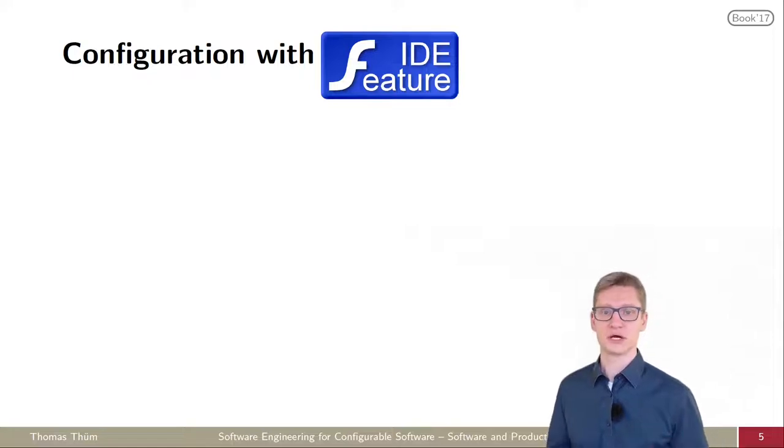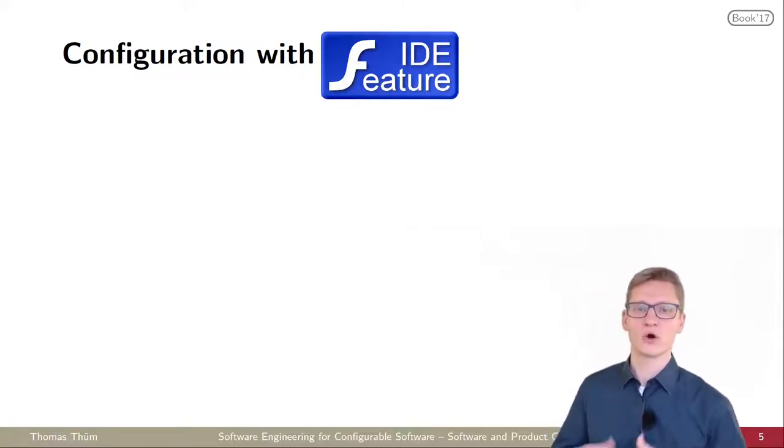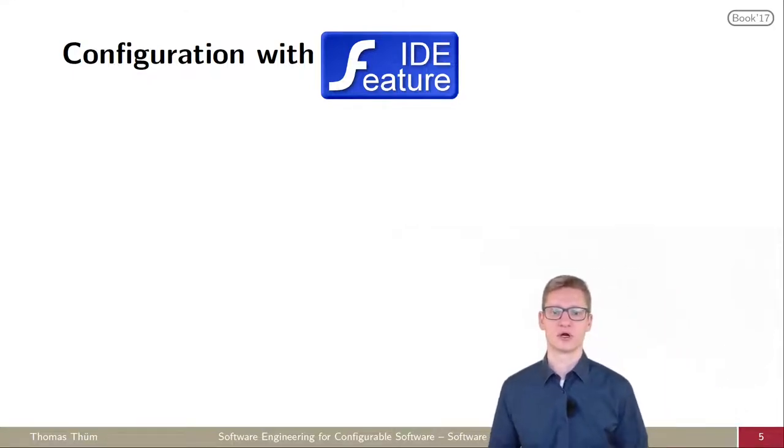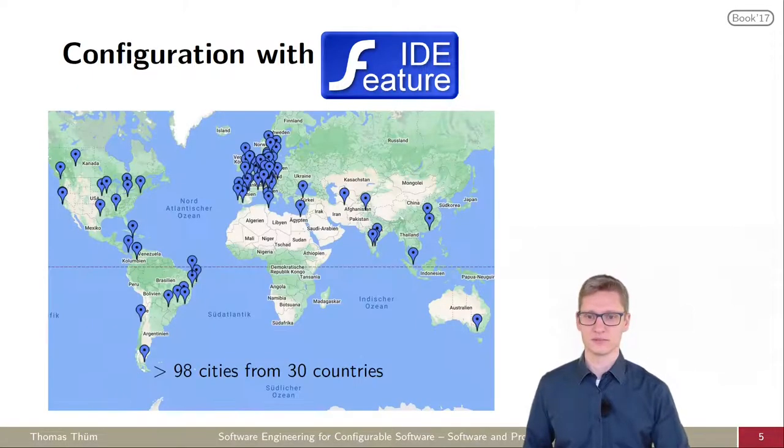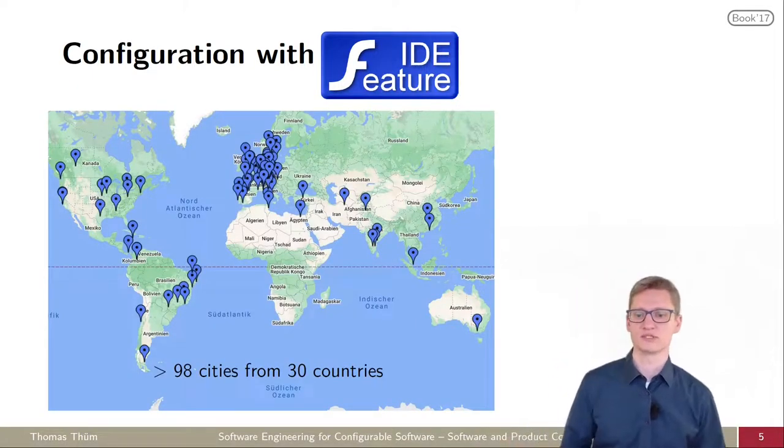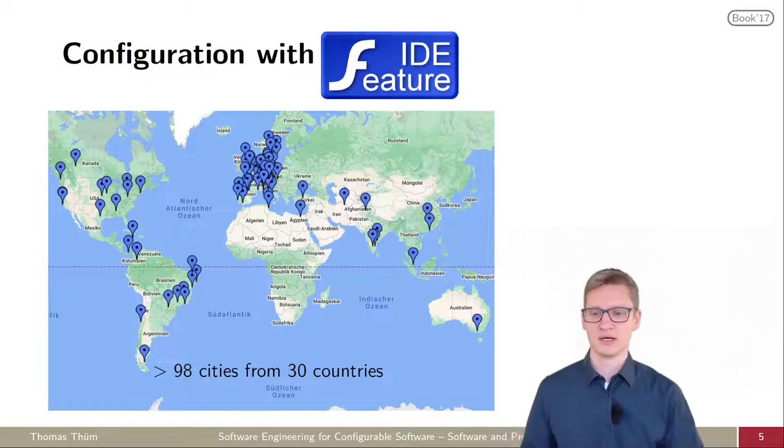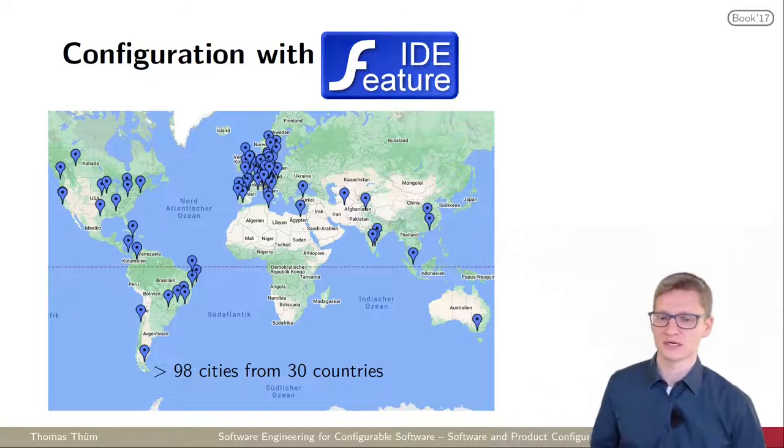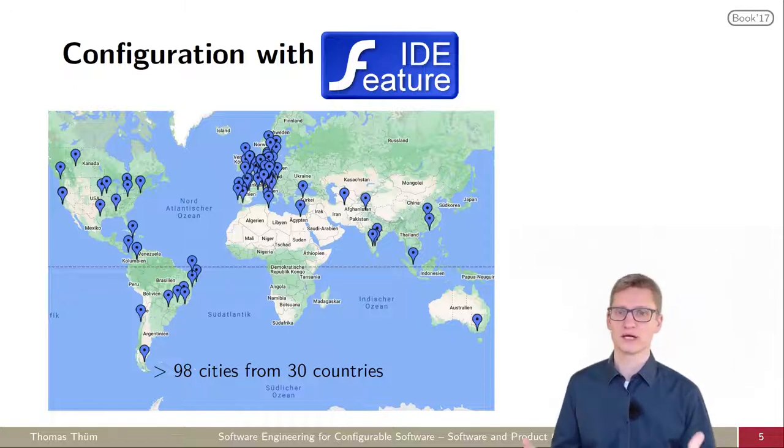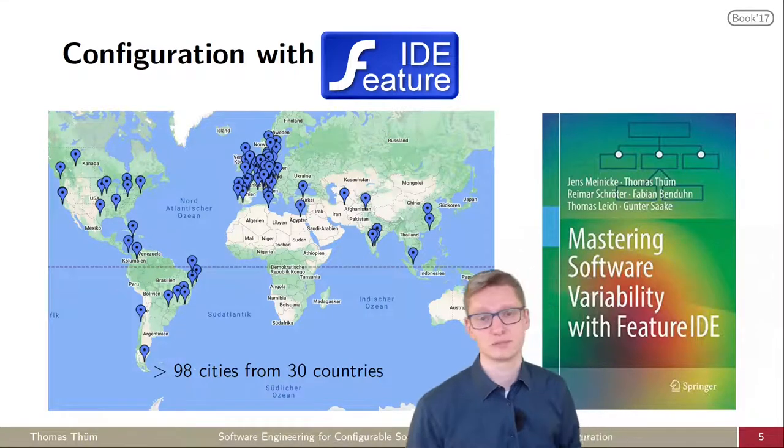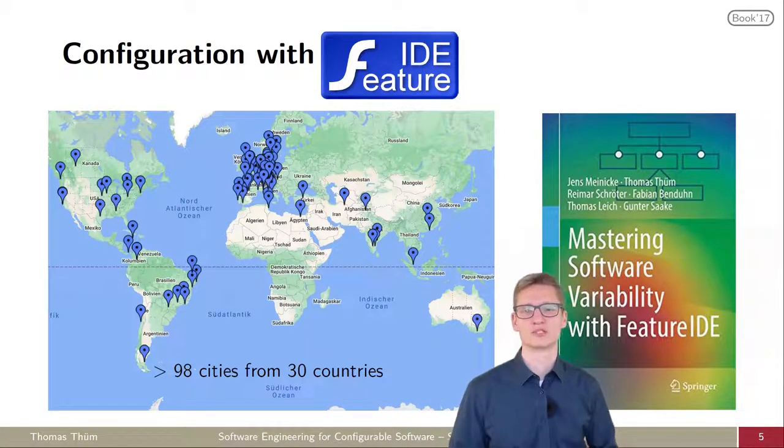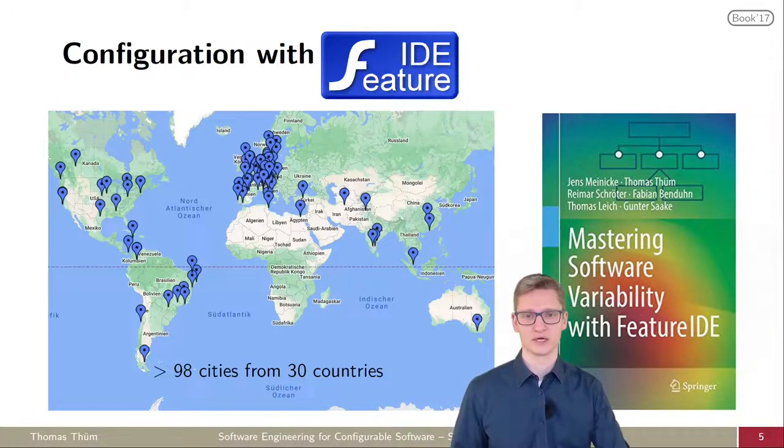That's the tool FeatureID. FeatureID is a tool for modeling those dependencies for configurable software and configurable products. We received support requests from about 100 cities from 30 countries, so it's used worldwide, mainly in research but also in industry. We wrote a book explaining what the tool is about, how you can use it, and what problems it solves and how they can be solved.